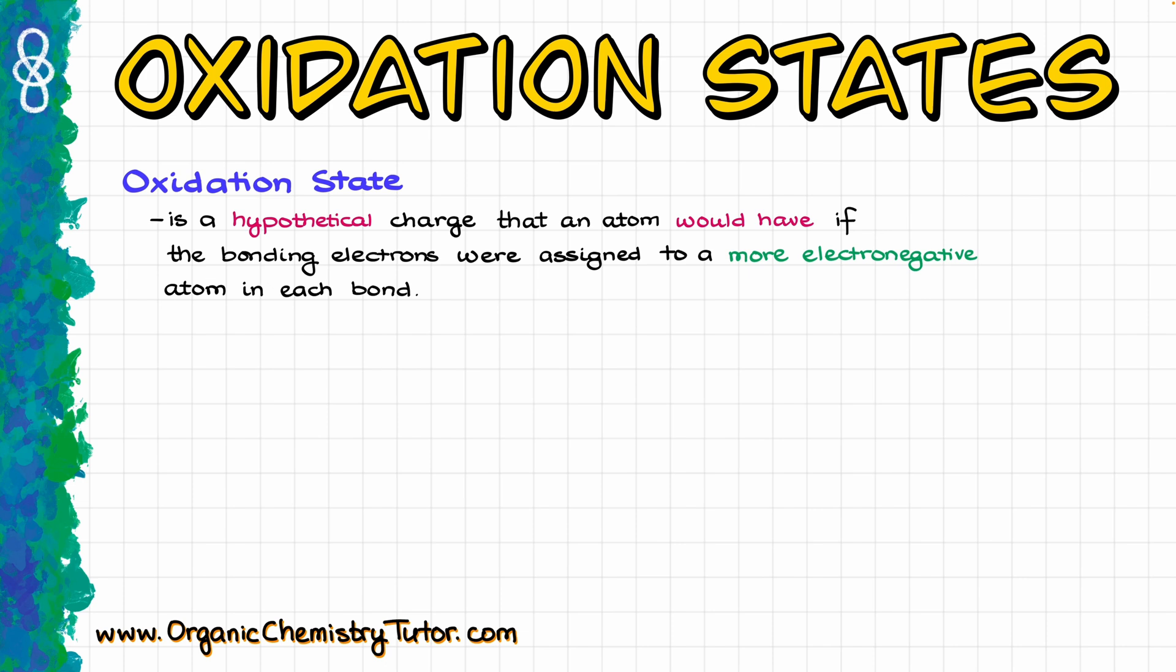Oxidation state, or oxidation number if you like, is a hypothetical charge that an atom would have if the bonding electrons were assigned to a more electronegative atom in each of our bond. So, essentially, we are going to be treating each bond as if it is an ionic bond rather than the covalent bond.